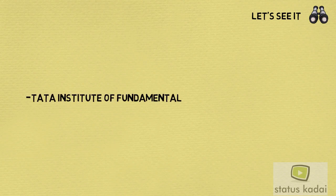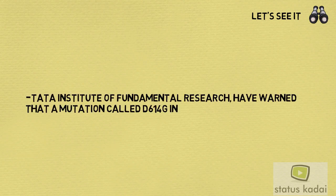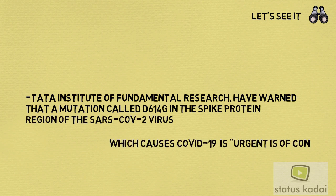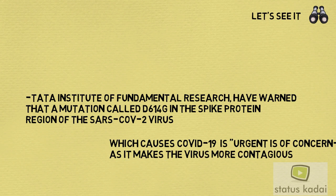The Tata Institute of Fundamental Research has warned that a mutation called D614G in the spike protein region of the SARS-CoV-2 virus, which causes COVID-19, is of urgent concern, as it makes the virus more contagious.